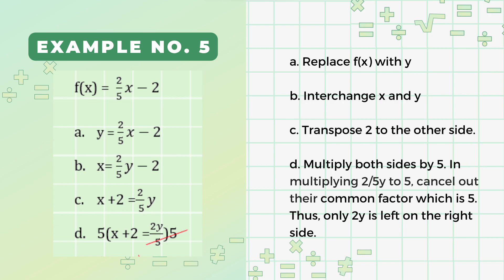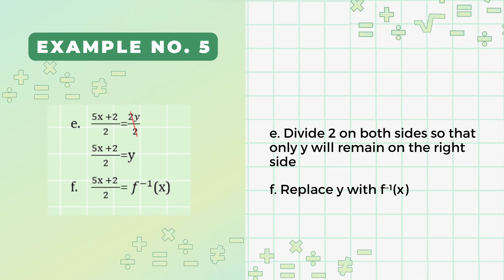To eliminate the 5 on the denominator, we'll multiply both sides by 5. In multiplying (2 over 5y) by 5, we can simply cancel out the common factor 5, leaving only 2y on the right side. Now, we will divide by 2 on both sides so that only y will remain on the right side. Lastly, replace y with f inverse of x to denote that it is an inverse function.